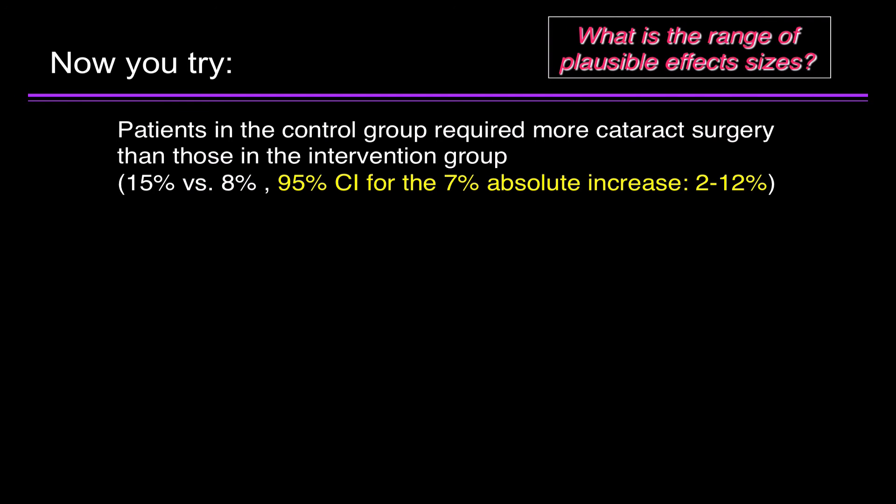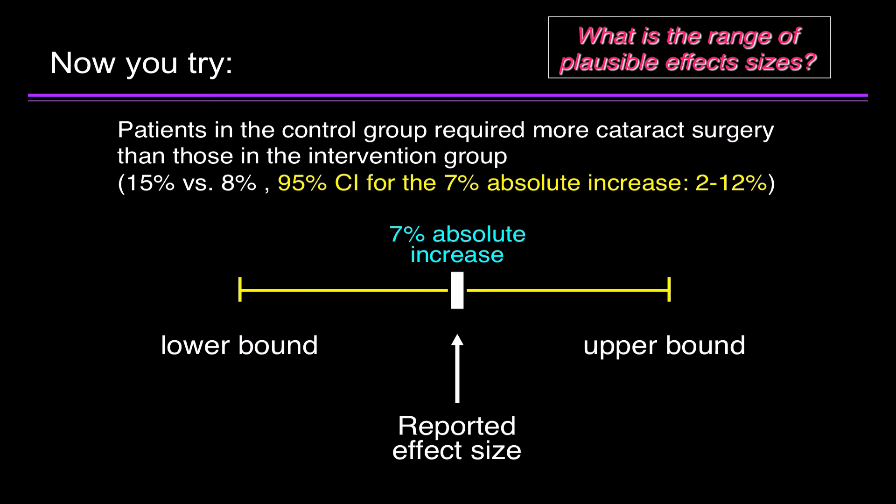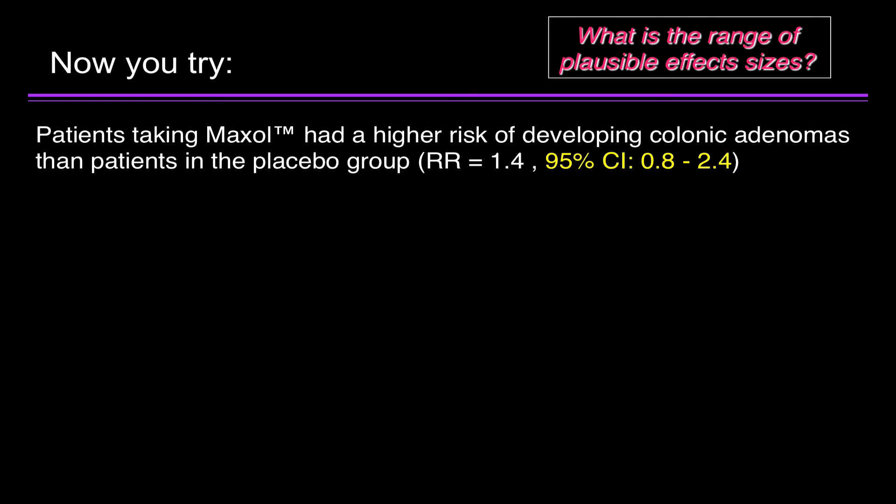It's always easy to address this question, what is the range of plausible effect sizes, by drawing a picture. The reported effect size? It's a 7% absolute increase. But there's some margin of error. The lower bound is a 2% absolute increase. The upper bound is a 12% absolute increase.